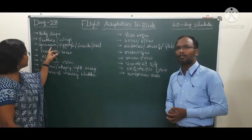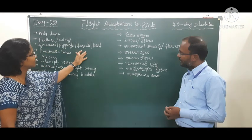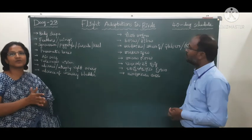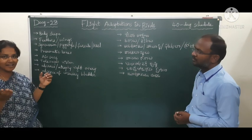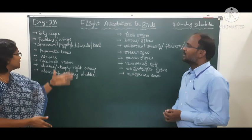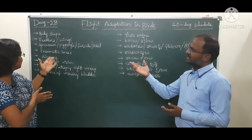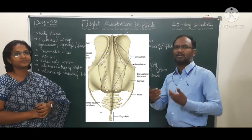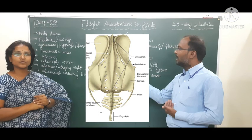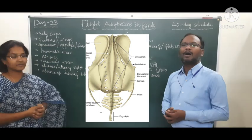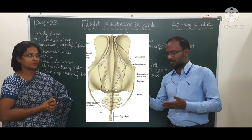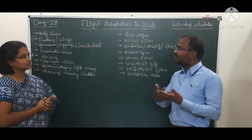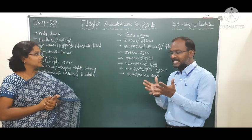Next we come to the synsacrum, pygostyle, and furcula. The synsacrum is the fusion of several bones — thoracic bones, lumbar bones, and the last sacral bones — merging together to form the synsacrum.